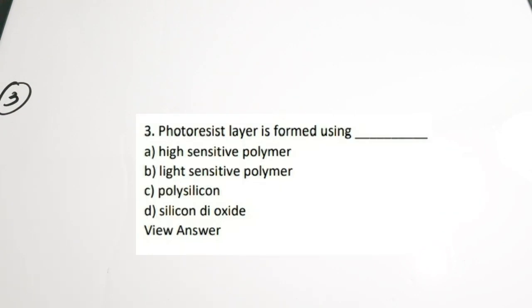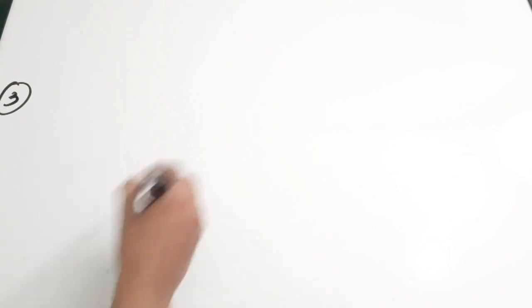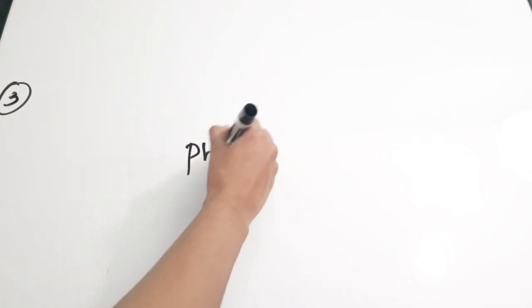The next question is regarding the photoresist material. The photoresist is used for creating a well or masking some portion. Question: Photoresist layer is formed using dash. Options: A - High sensitive polymer, B - Light sensitive polymer, C - Polysilicon, D - Silicon dioxide. Light sensitive polymer material is actually used for photoresist.